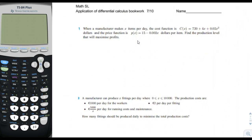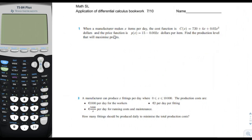We have two main variables: the profit and the number of items made per day. The goal is to find the optimum X so that the profit is maximum. To find the profit we need to use the price per item and the cost function. The profit P is the price per item multiplied by the items sold, then we subtract the cost function.